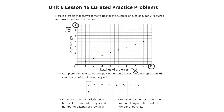Complete the table so that the pair of numbers in each column represents the coordinates on the graph. When X is 1, our S — cups of sugar — appears to be halfway in between 0 and 1. Halfway between 0 and 1 is going to be a half.